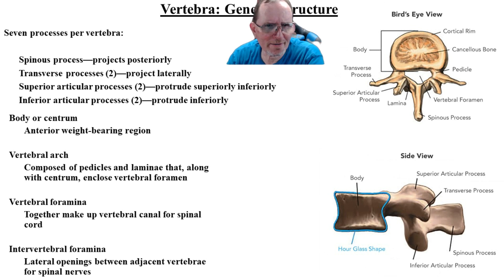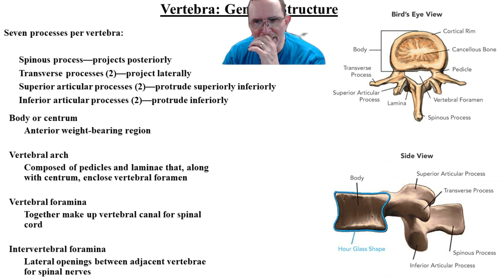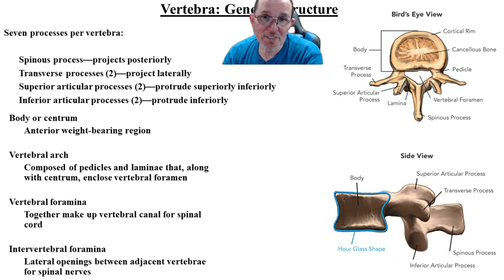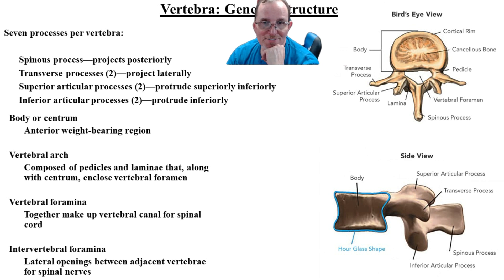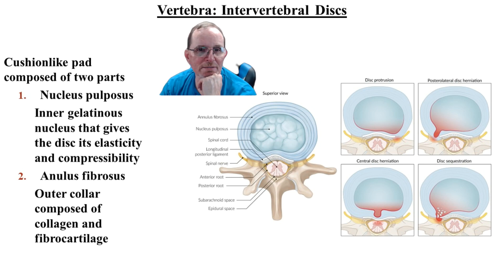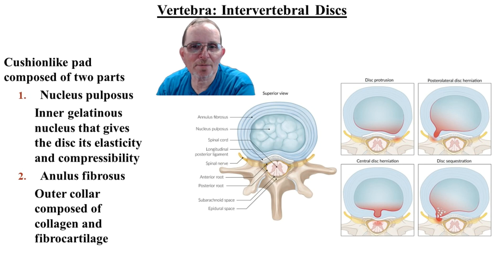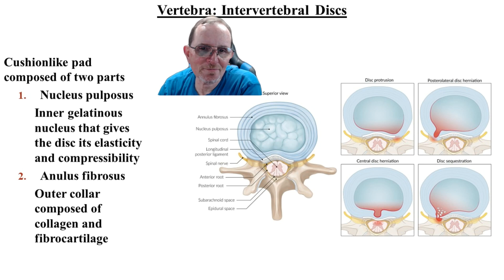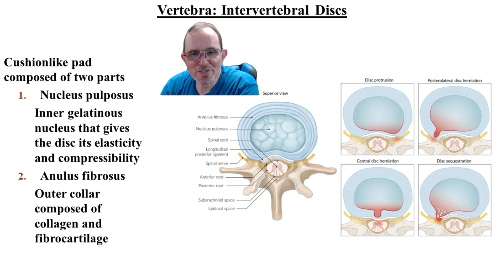The vertebral foramen is where the spinal cord is housed. When another vertebra connects, the area between them forms the intervertebral foramen — that's where nerves come out from the spinal cord to innervate muscles and provide sensation. The intervertebral disc has two parts: the fibrous outer ring called the annulus fibrosus, and the gelatinous inner nucleus pulposus, which acts as a cushion to prevent the bones from hitting each other when we walk and bounce.